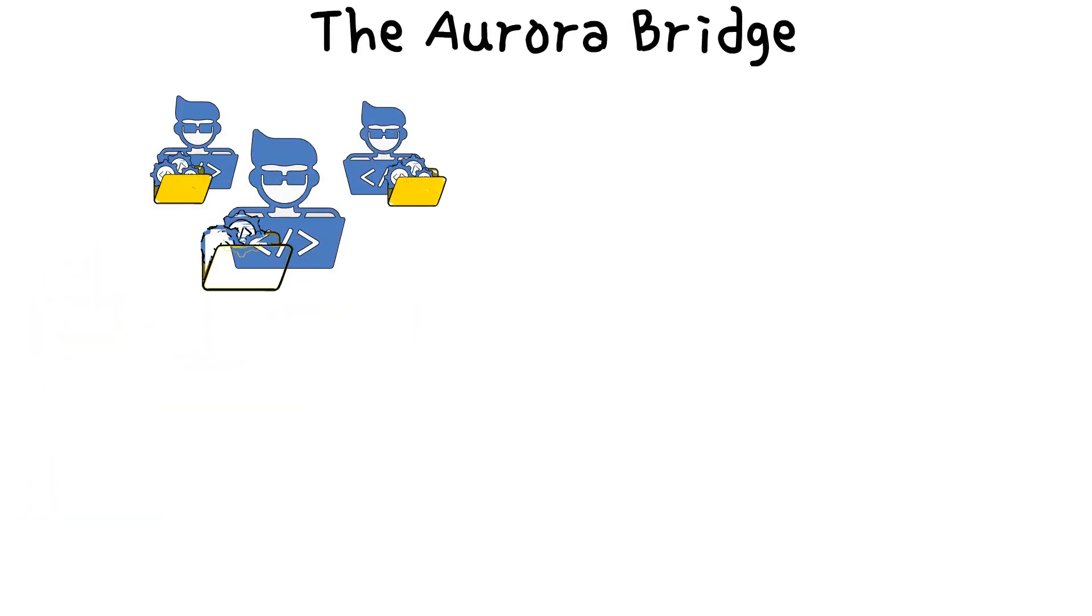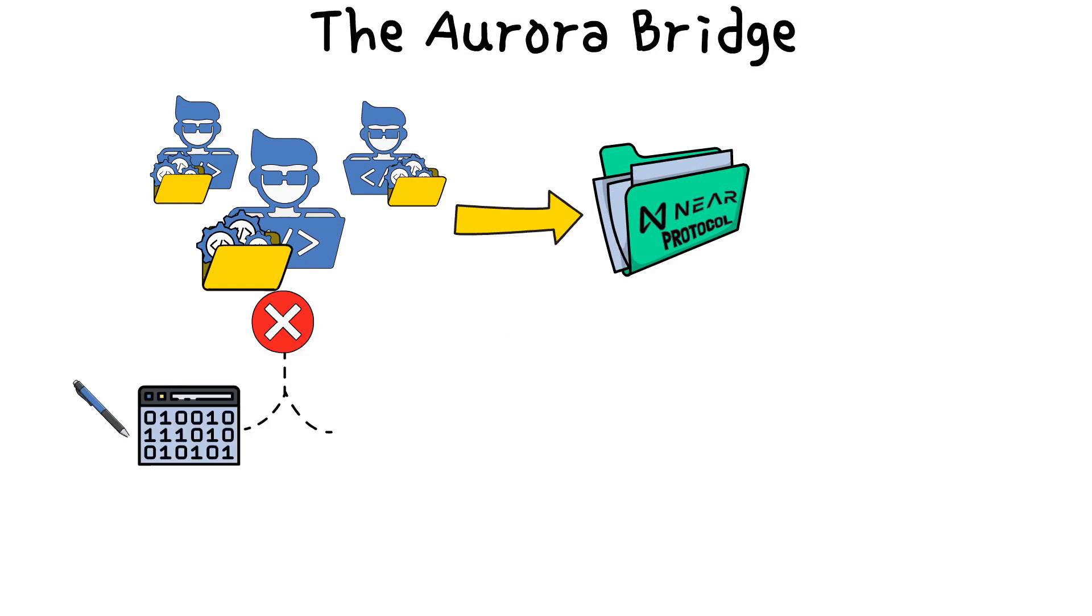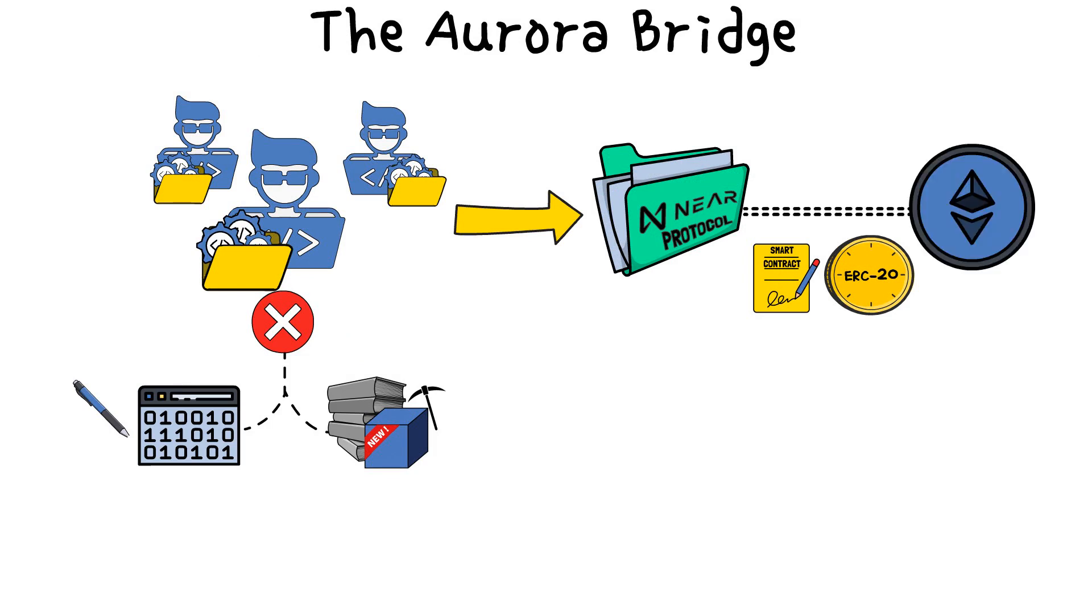Developers can initiate their projects on NEAR without undergoing the ordeal of rewriting their dApps or acquiring new development skills for a new blockchain. Bridging smart contracts and ERC20 tokens between Ethereum and NEAR protocol is made to be as simple as possible through the Aurora Bridge, which employs the same technology as the Rainbow Bridge.